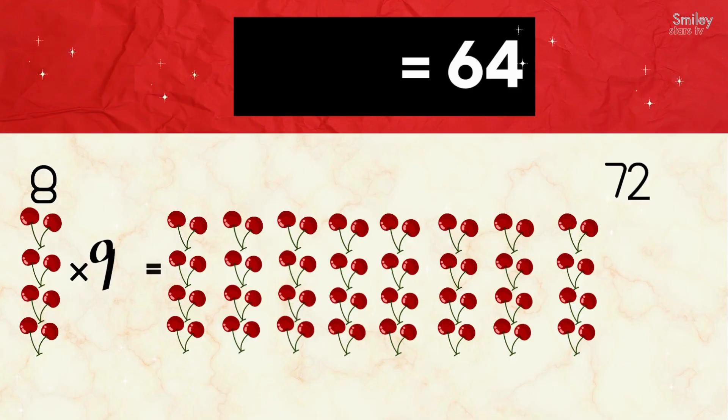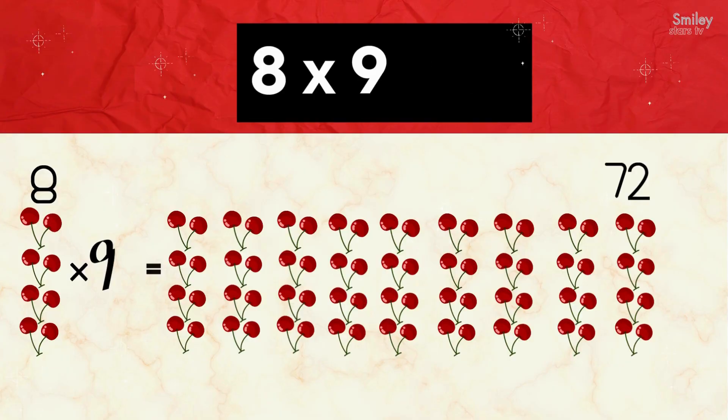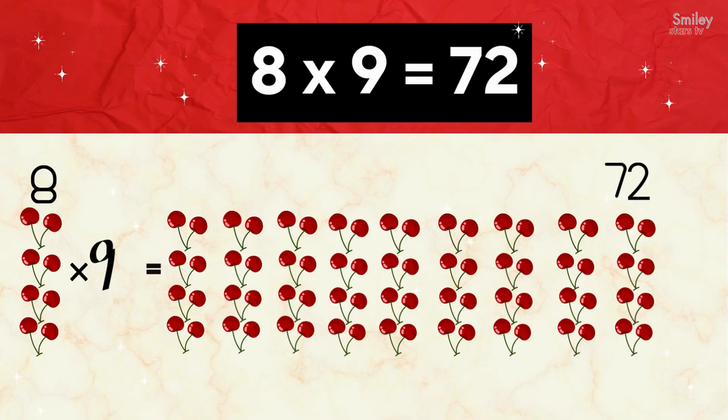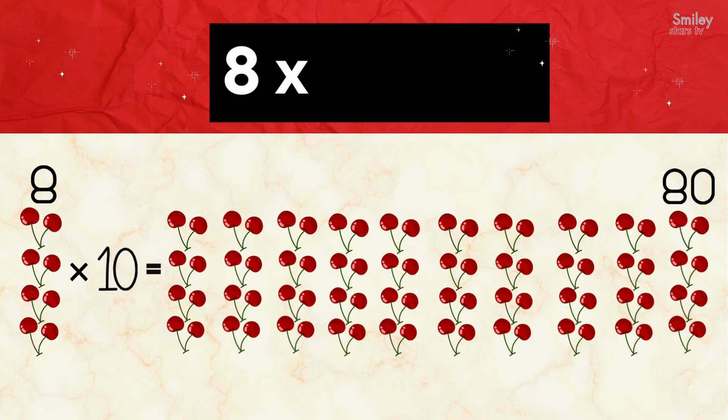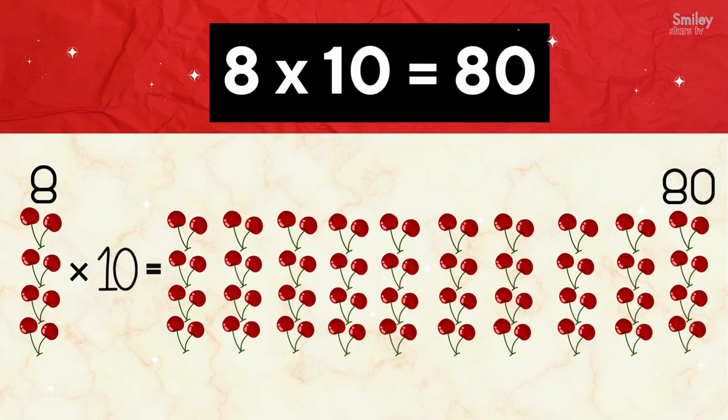8 eights are 64. 8 nines are 72. 8 nines are 72. 8 tens are 80. 8 tens are 80. Yay!